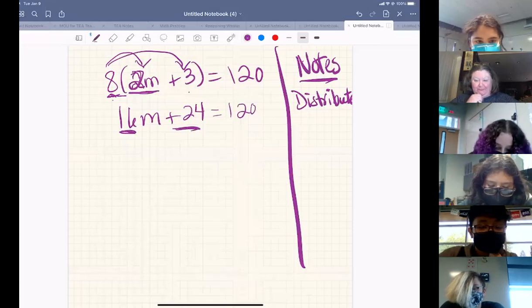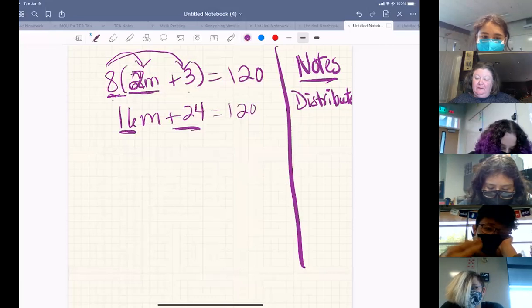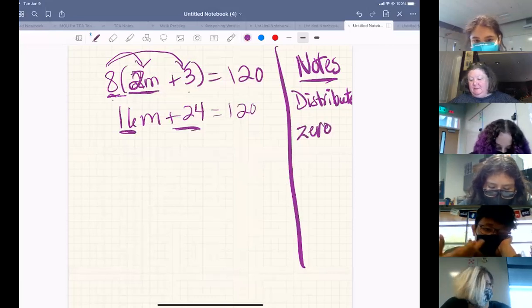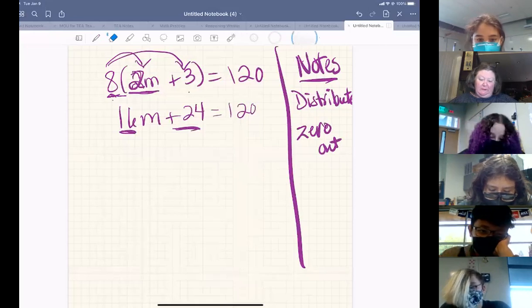Yes, distributive property. The next thing we want to look for is, is there something we can zero out or get rid of, turning it into a zero? What do you see here that we could zero out?